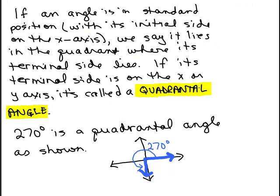Now, if an angle is in standard position like we did on the previous page where we put the initial side right on the x-axis, the right side of the x-axis, the angle lies in the quadrant where its terminal side lies. All we do is we look at where the terminal side of an angle lies, and we say that angle is in that quadrant.